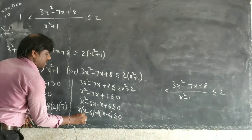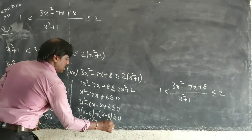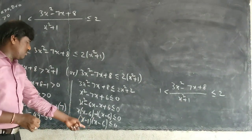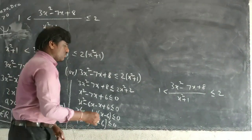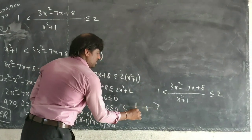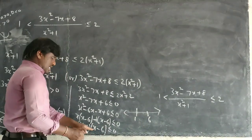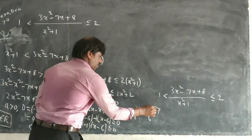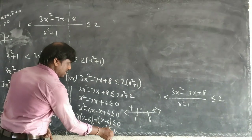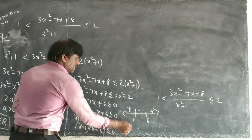This gives x minus 1 times x minus 6, less than or equal to 0. I can use the number line: marking 1 and 6, the sign scheme is plus, minus, plus. The negative region is between 1 and 6, so the answer is 1 to 6 — that is, x belongs to the closed interval [1, 6].